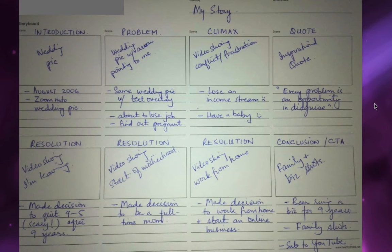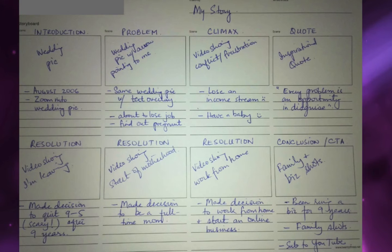After you've written your script, it's time to storyboard your video. I like doing this with pen and paper because it allows me to identify what visuals go with what aspects of the story. What I would do is split the screen into eight sections of the story, and for each section I want to identify what the visuals are going to be.